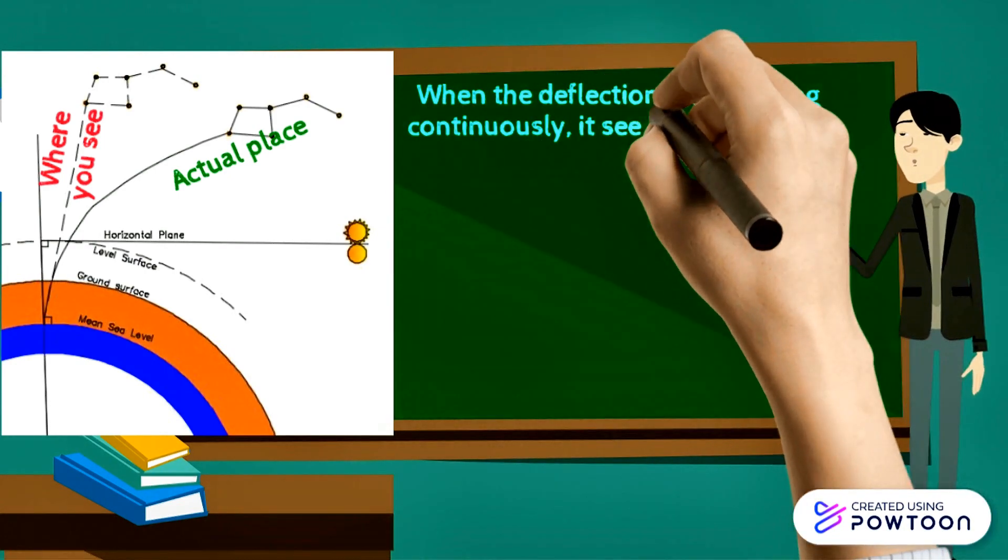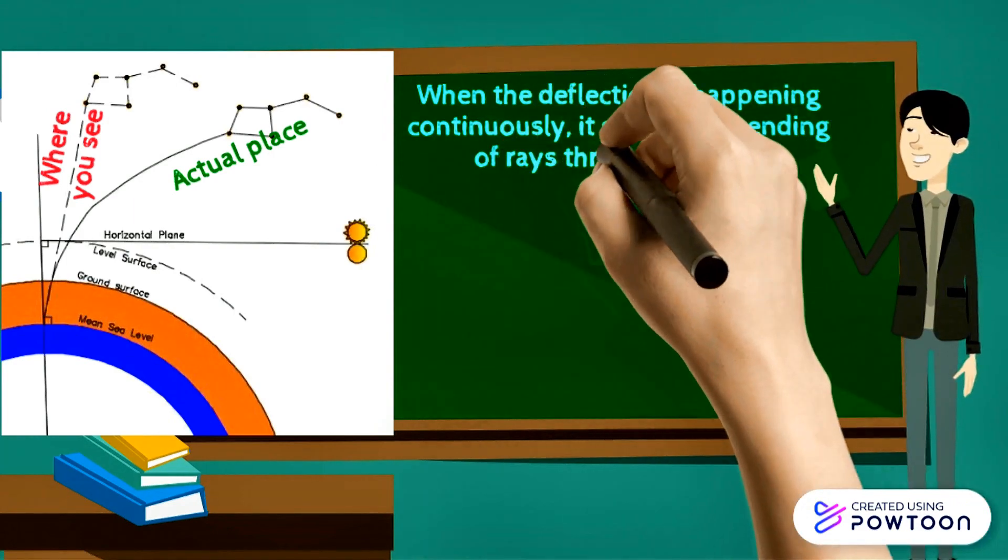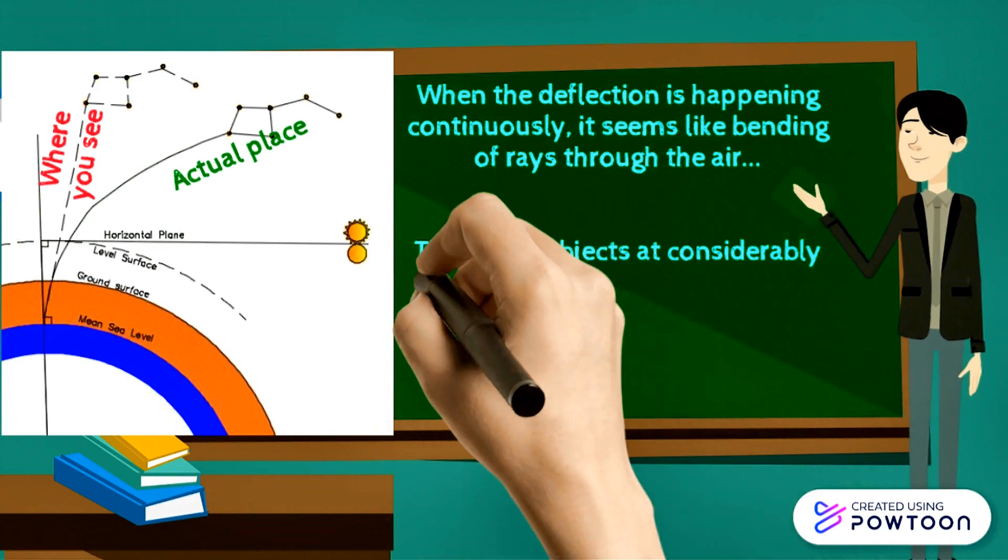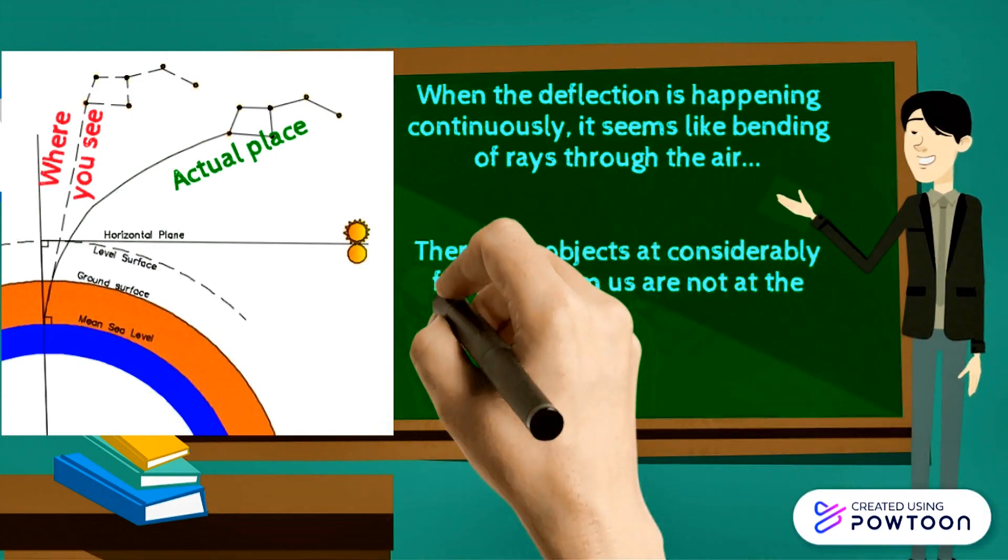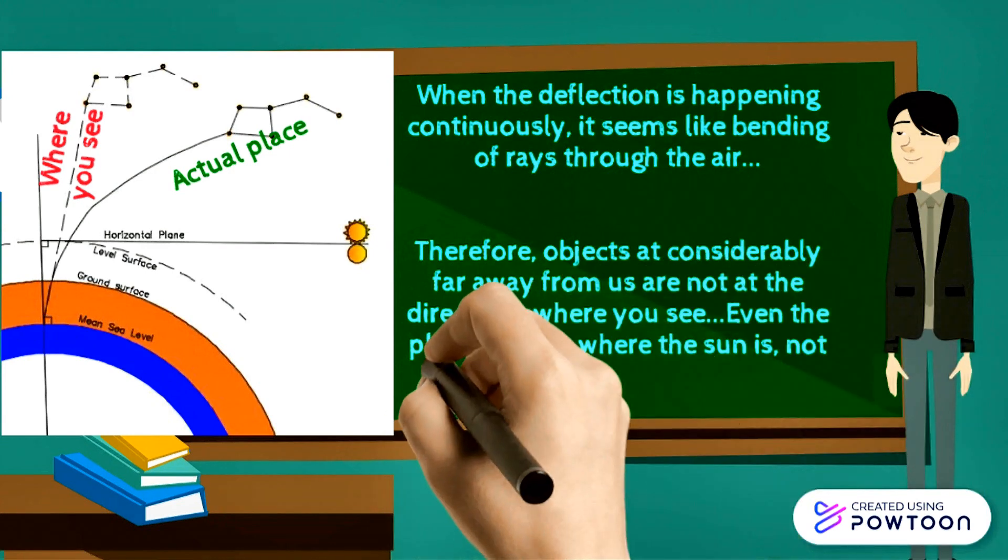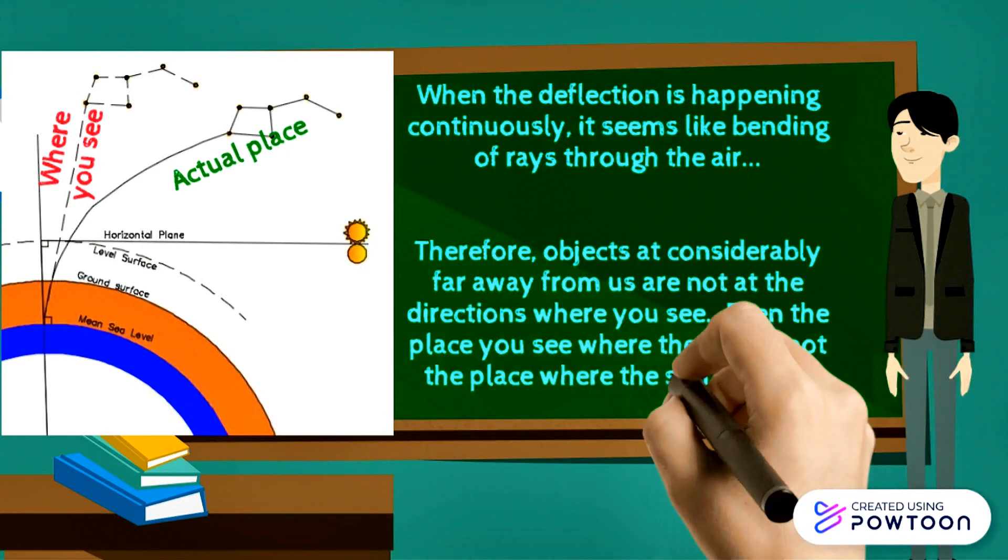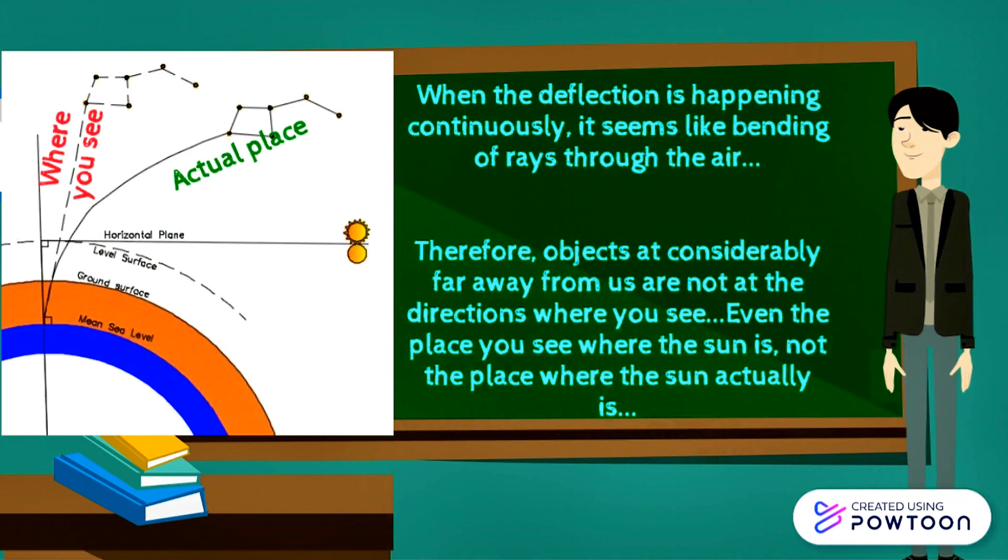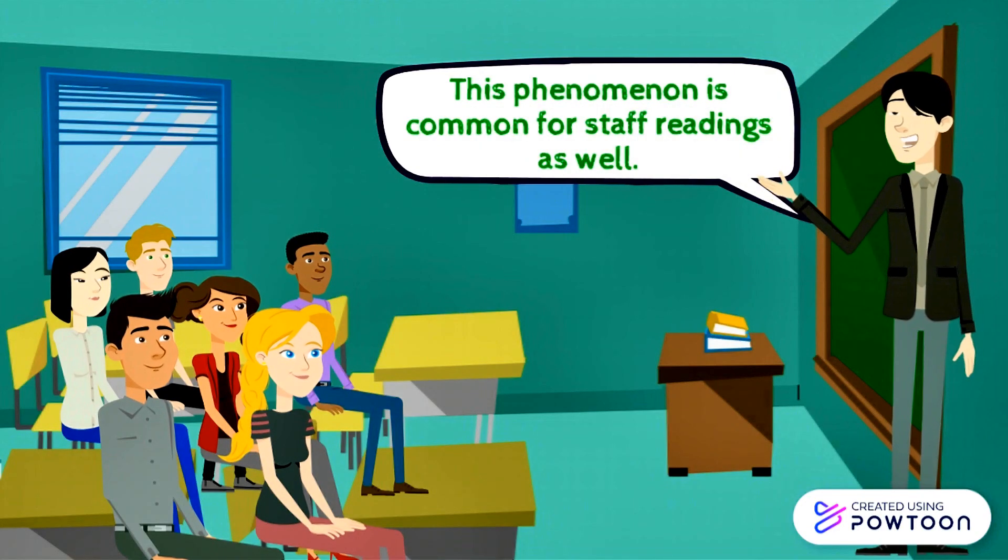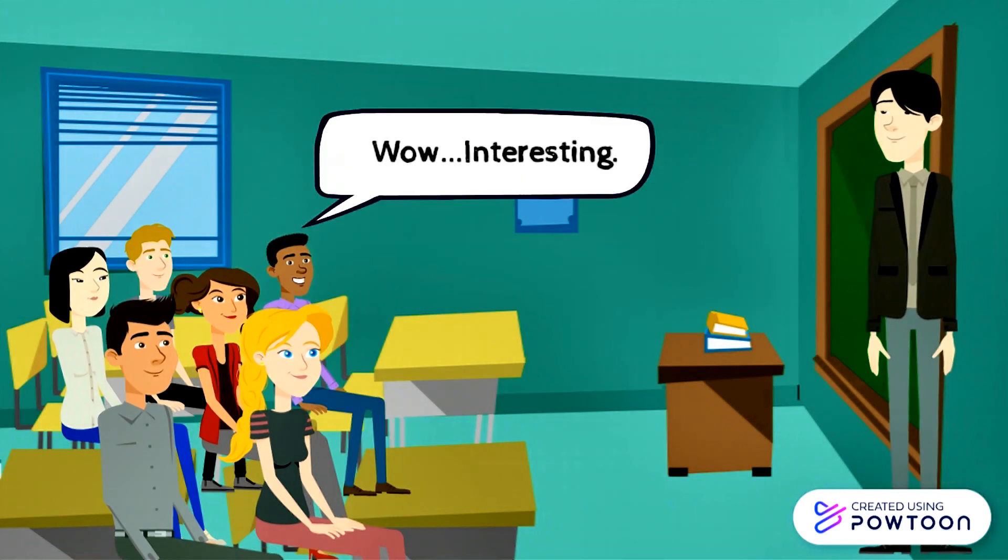When the deflection is happening continuously it seems like bending of rays through the air. Therefore objects at considerably far away from us are not at the directions where you see. Even the place you see where the sun is not the place where the sun actually is. This phenomenon is common for staff readings as well.